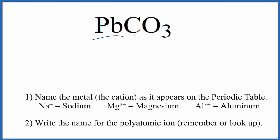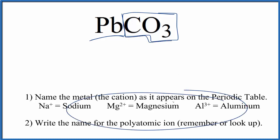To write the name for PbCO3, we first need to recognize that Pb here, this lead, is a transition metal. And this CO3, this is a polyatomic ion. It's the carbonate ion. So we have the transition metal and the polyatomic ion here, and we can use these rules to write the name for PbCO3.